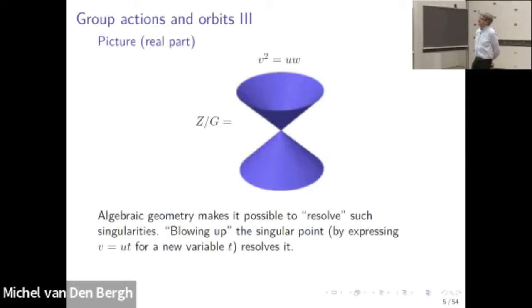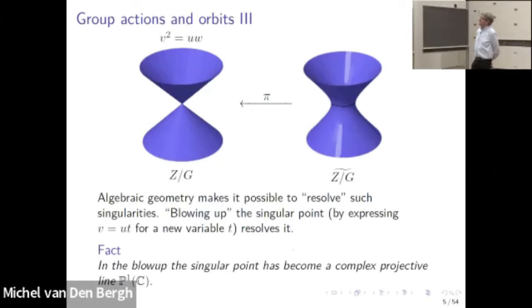In algebraic geometry, and Sasha already mentioned this, we can resolve such singularities by a procedure called blowing up. On the right-hand side we see what happens if we do this: the picture looks very smooth, and one has the impression that the point has been replaced by a circle. But that's misleading because we only have the real points in the picture — what actually happens is that the singular point is replaced by a complex line.